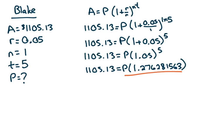To solve for P, divide both sides by 1.27, et cetera. Rounding that to two decimal places, Blake would have had to invest $865.90.